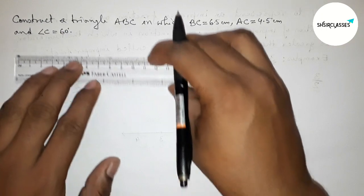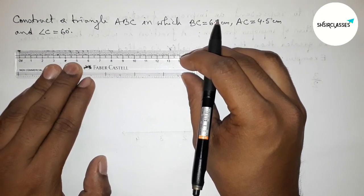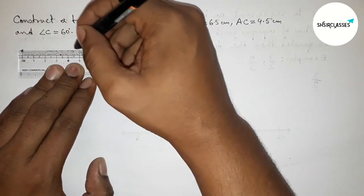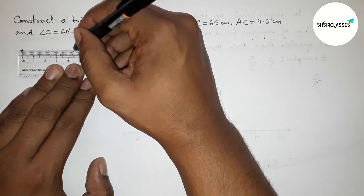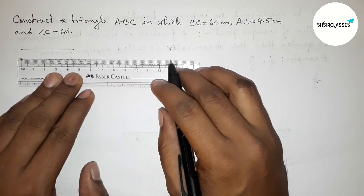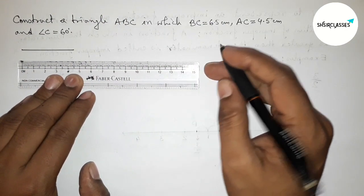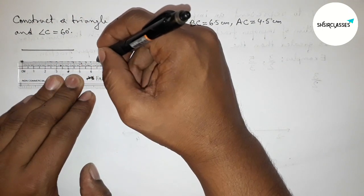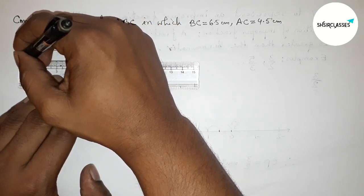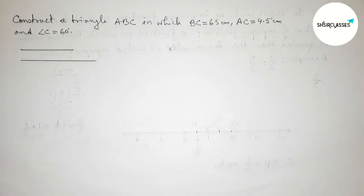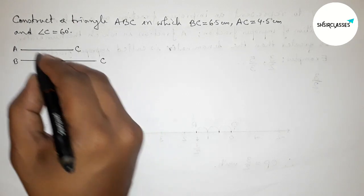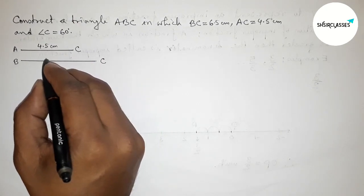First of all, let us draw the given two sides. First, drawing here 4.5 centimeters, so this is a 4.5 centimeter line. Then drawing 6.5 centimeters. Okay, so now this one is the AC line and this one is the BC line segment. This one is 4.5 centimeters and this one is 6.5 centimeters.